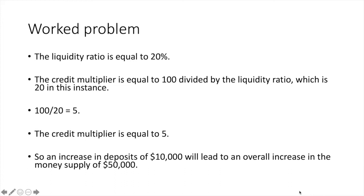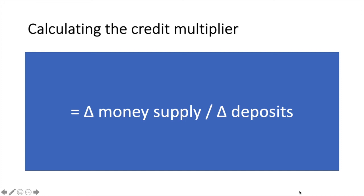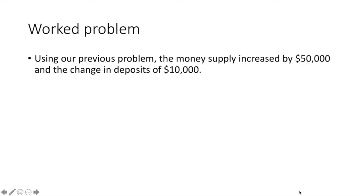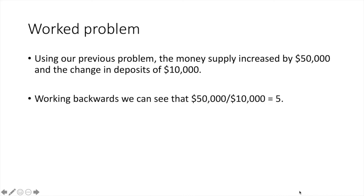A key thing to remember is that we are assuming banks are lending to their maximum capacity and holding on to only the minimum reserves required. Another way to calculate the credit multiplier is to divide the change in the money supply by the change in deposits. Using our previous problem, the money supply increased by $50,000 and the change in deposits was $10,000. Working backwards, $50,000 divided by $10,000 equals 5.